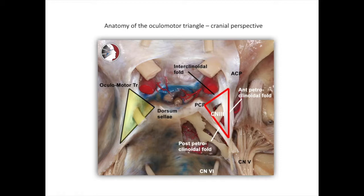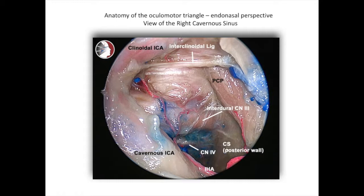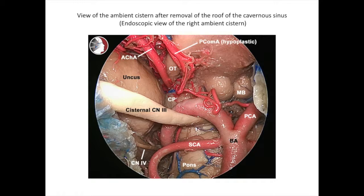Notice that the course of the oculomotor nerve is lateral and roughly parallel to the interclinoidal fold. Reviewing the anatomy of the oculomotor triangle from an endonasal perspective, we again see the interclinoidal fold, being medial and just parallel to the interdural segment of the oculomotor nerve. Removal of the oculomotor triangle in the posterior roof of the cavernous sinus provides wide exposure of the ambient cistern.